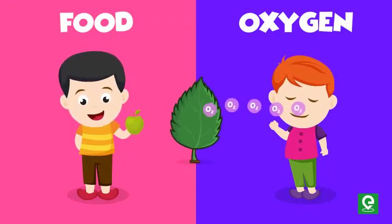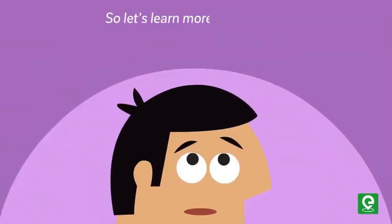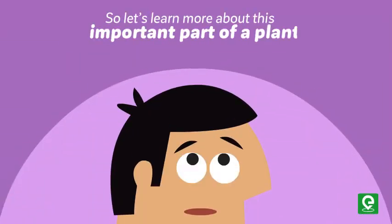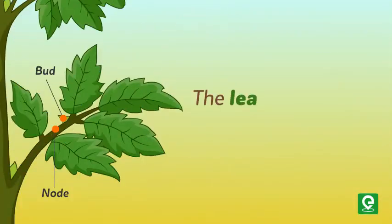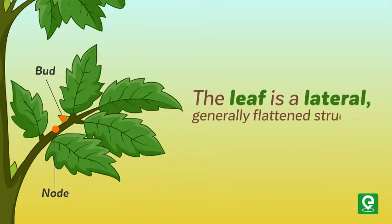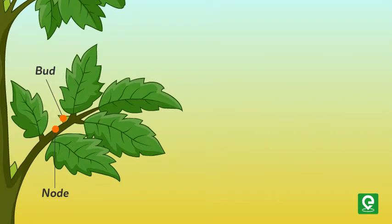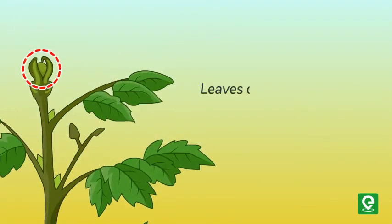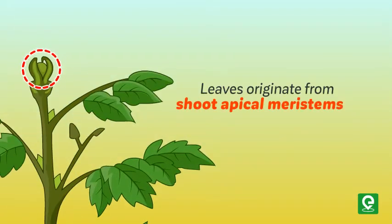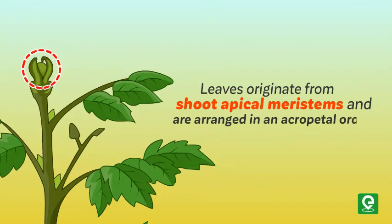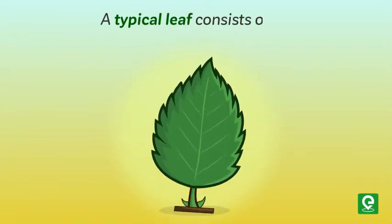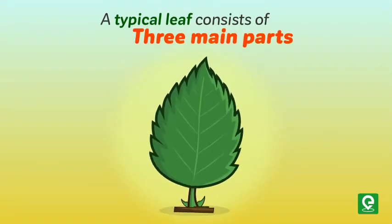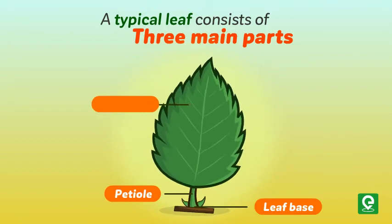That's why leaves are considered the most important organ of plants. The leaf is a lateral, generally flattened structure borne on the stem; it develops at the node and bears a bud in its axil. Leaves originate from shoot apical meristems and are arranged in an acropetal order. They are the most important vegetative parts. A typical leaf consists of three main parts: leaf base, petiole, and lamina.